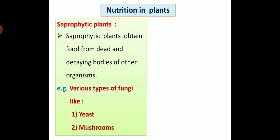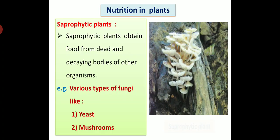Saprophytic plants: saprophytic plants obtain food from dead and decaying bodies of other organisms. For example, various types of fungi like yeast and mushroom. See in picture, we can see saprophytic plant.